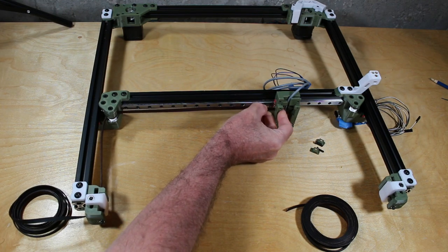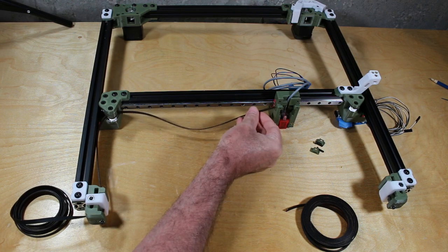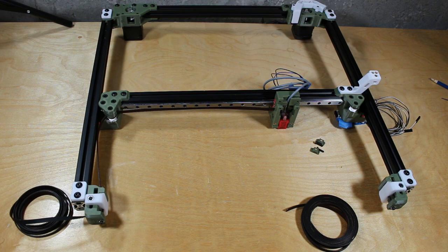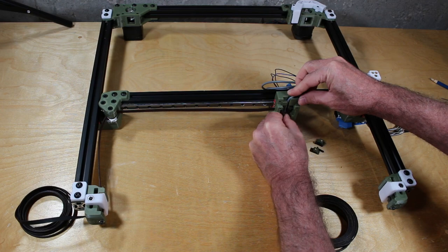I'm inserting the end in the carriage here and I'm going to thread it through and pull it through. Later on with the belt tightener, I can tighten these down.